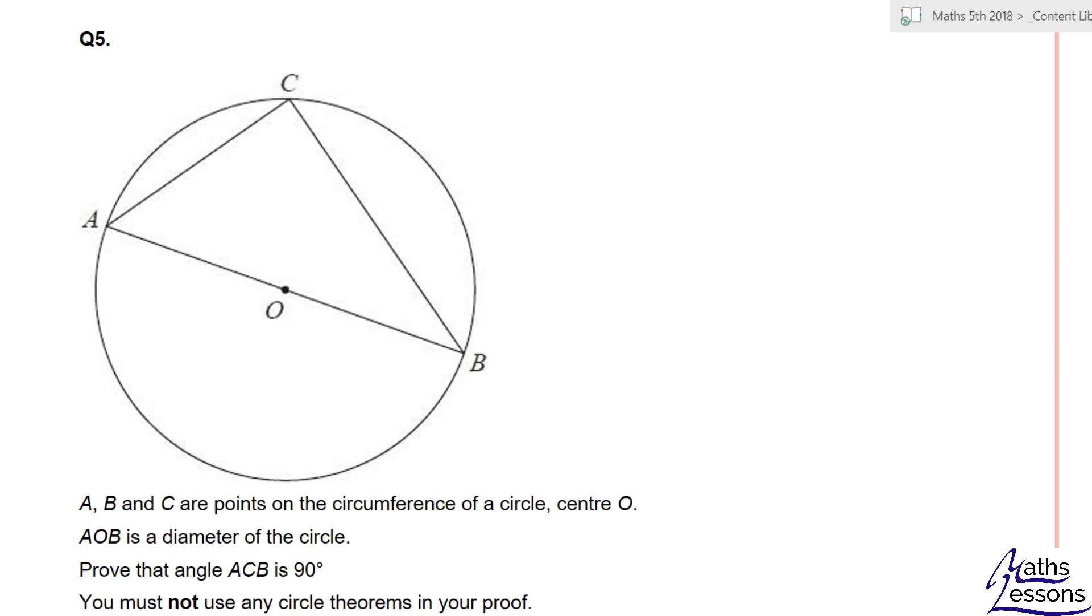Okay, on this question, we're going to look at this. We've got A, B, and C as points on the circumference of the circle, and we know that AOB is a diameter, and we want to prove that this is a 90 degree angle. But we're not allowed to use any circle theorems.